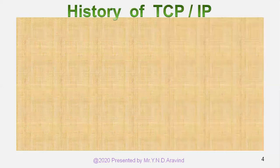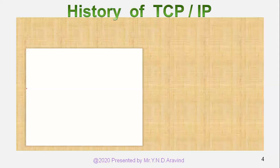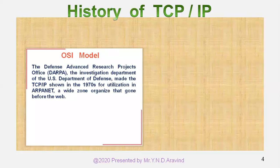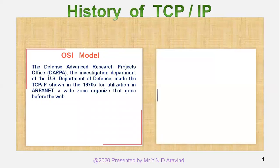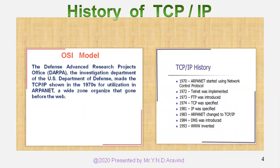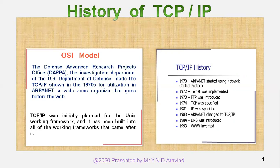Coming to the history of TCP/IP, the Defense Advanced Research Projects Agency (DARPA), the investigation department of the U.S. Department of Defense, developed TCP/IP in the 1970s for use in ARPANET, a wide-area network that preceded the internet. TCP/IP was initially designed for the UNIX operating system and has since been built into all operating systems that followed.